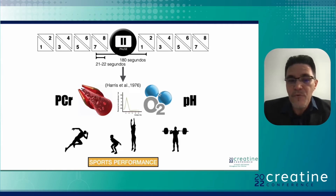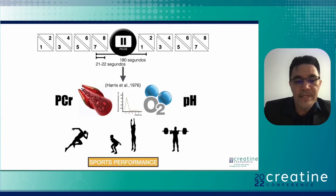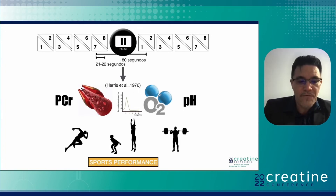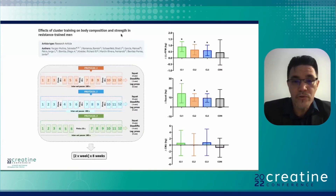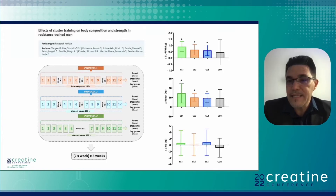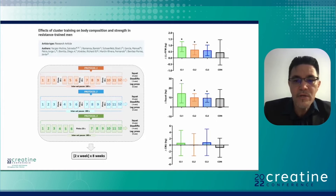Most research on cluster sets has been centered on sports performance — their origin was in increasing strength, jump performance, and displacement power. However, the evidence regarding body composition and hypertrophy is limited, and this is the gap our project aimed to address. We evaluated body composition via DEXA and strength levels using a jump platform assessing jump with a force-velocity movement.